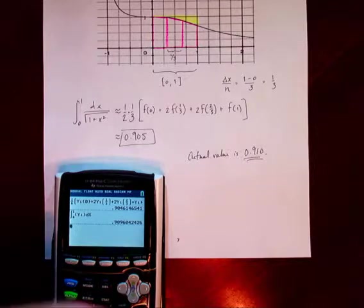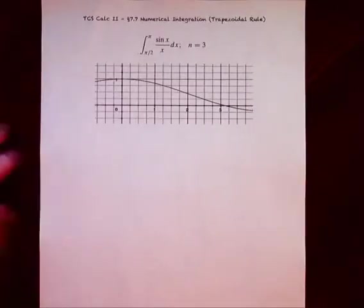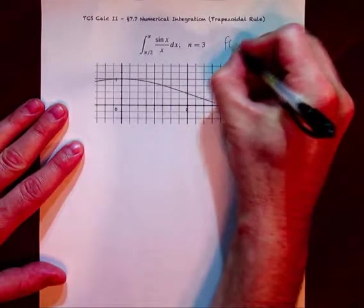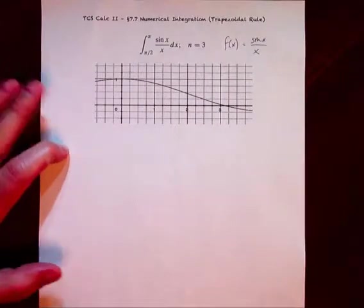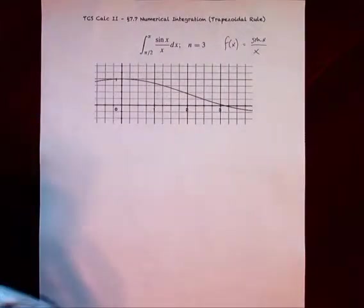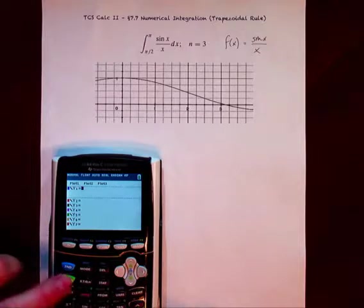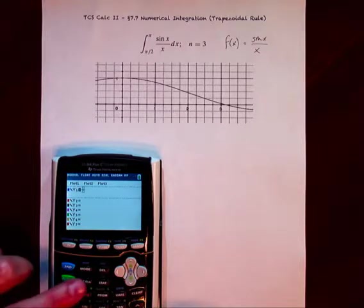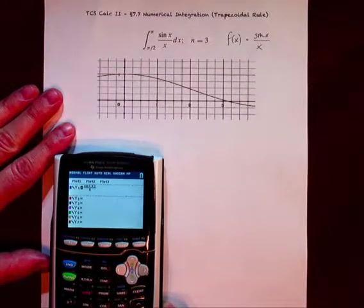Alright, let's do another example. This one is going to be sine x over x. Let's remind ourselves about this function and go ahead and plug sine x over x into our calculator. We're going from pi over 2 to pi.